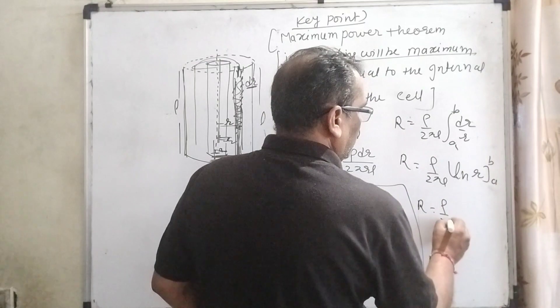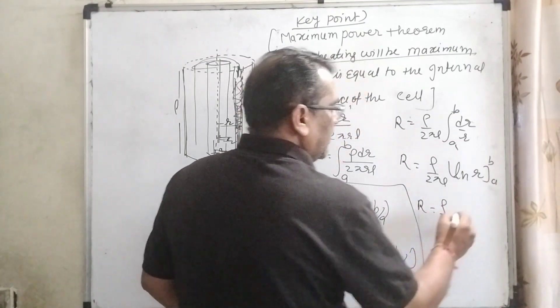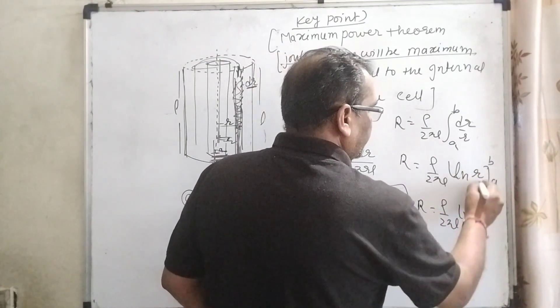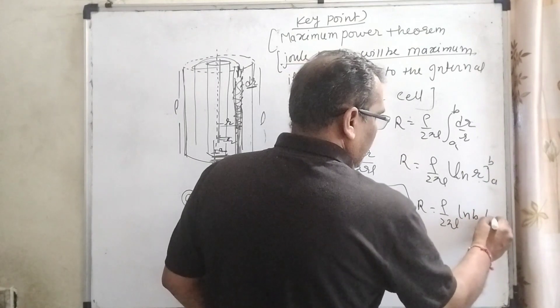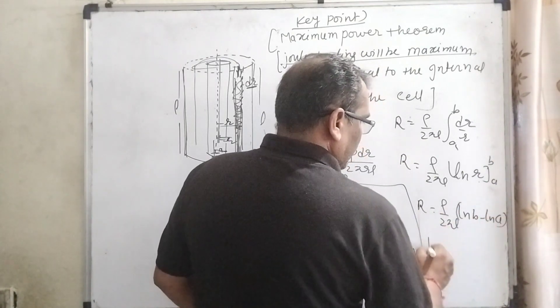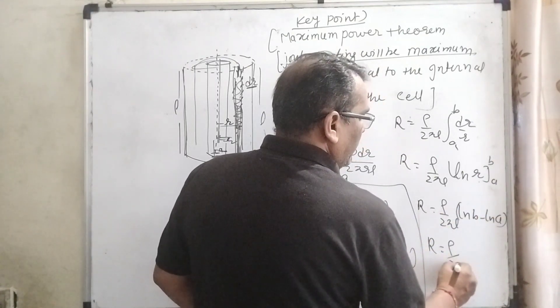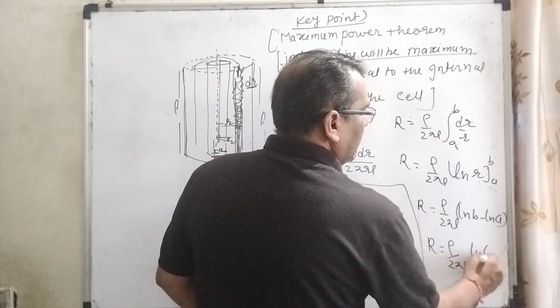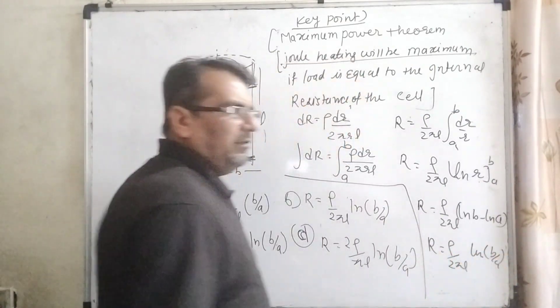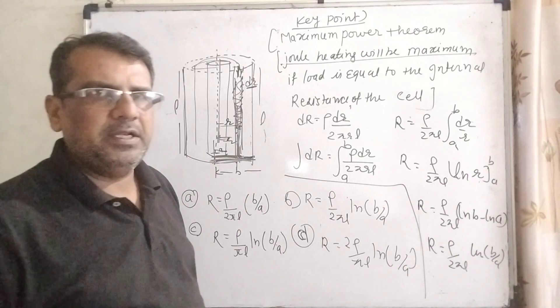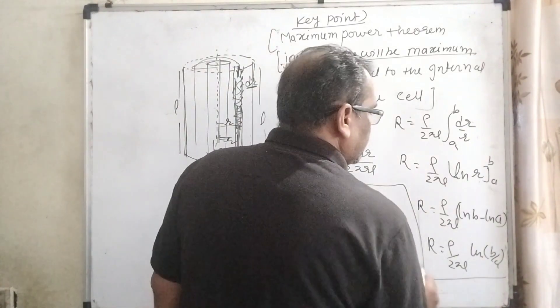Now R equals rho by 2πL, by using log property, ln B minus ln A. Then R equals rho by 2πL times ln(B by A). You know that very well: log M minus log N can be written as log M by N. So here is our answer.